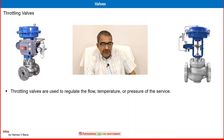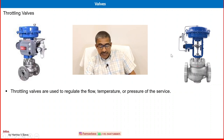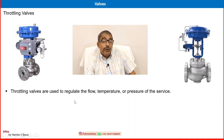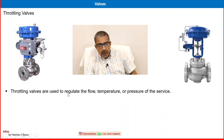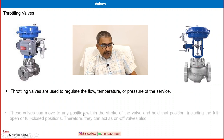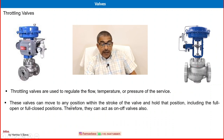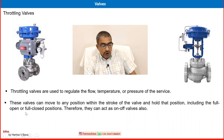The third category in functional classification is the throttling valve. There is a significant difference from non-return valves and on-off valves. Throttling valves are used to regulate the flow, temperature, or pressure of the process fluid. You can maintain, increase, and decrease the flow, pressure, or temperature. These valves can be moved to any position within the stroke of the valve and hold that position, including full open or full close. Therefore, they can act as an on-off valve.